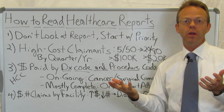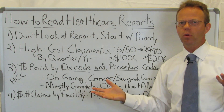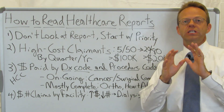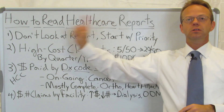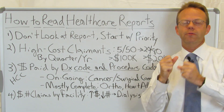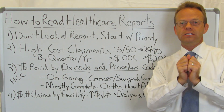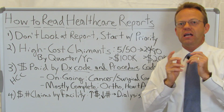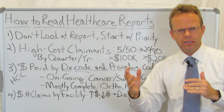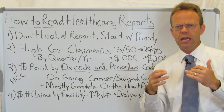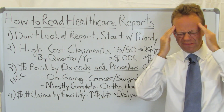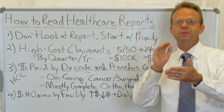Everyone that works in employee benefits and health insurance knows we read a ton of healthcare reports. Don't look at the actual report first. Instead, in your mind, ask: what do I want to see — what information would actually be helpful? Then ask, where in the report can I find that? Because reports are typically 75 pages long and it's so easy to get distracted by all the different charts and graphs. You need to separate the wheat from the chaff by envisioning what you want to see first, and then looking at the report specifically for that.